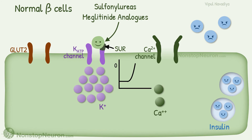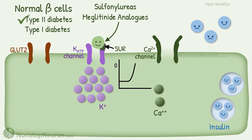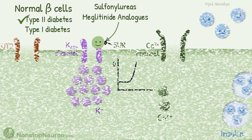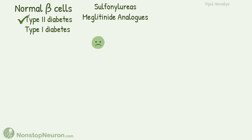These drugs require normal beta cells to produce their action. In type 2 diabetes, the beta cells are present, so these drugs are effective. However, in type 1 diabetes, nearly all the beta cells are destroyed, so these drugs are not effective in type 1 diabetes.